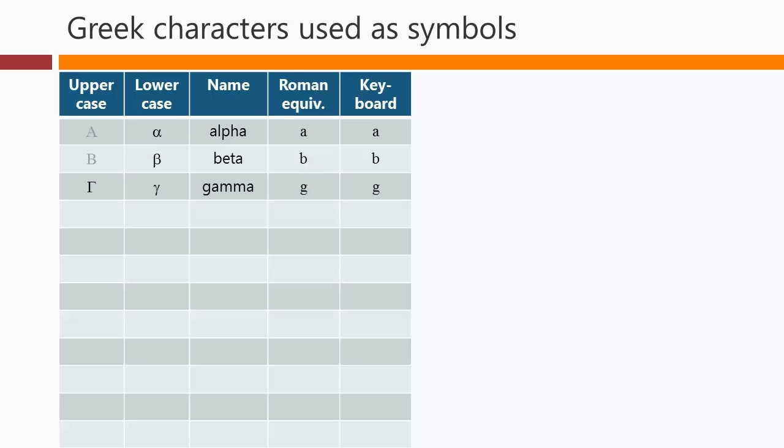The letter gamma. Again, we'll use the uppercase and the lowercase quite a lot. The closest Roman letter is G.